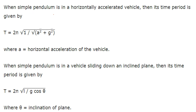When a simple pendulum is in a horizontally accelerated vehicle, the time period is T = 2π√(l / √(a² + g²)), where a is the horizontal acceleration of the vehicle. When the simple pendulum is in a vehicle sliding down an inclined plane, the time period is T = 2π√(l / g·cosθ), where θ is the angle of inclination of the plane.